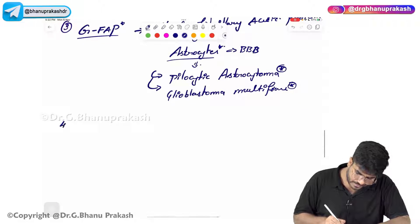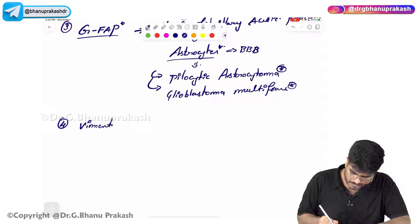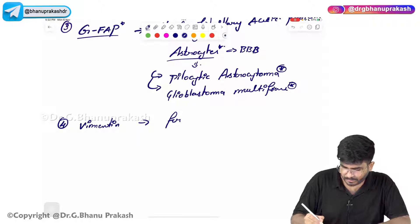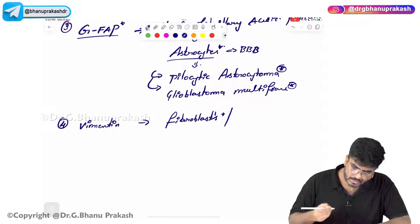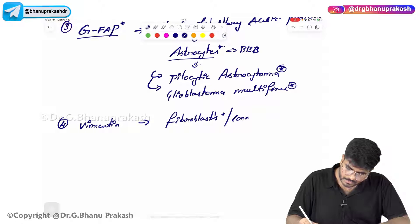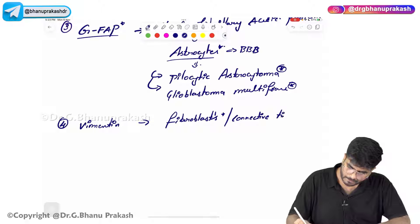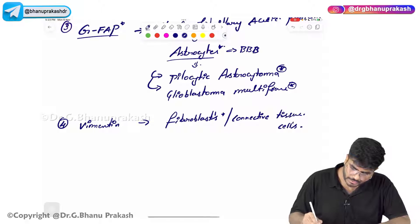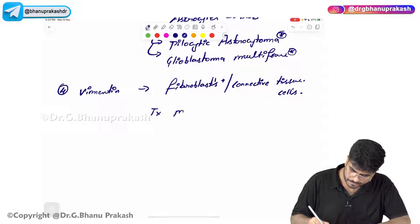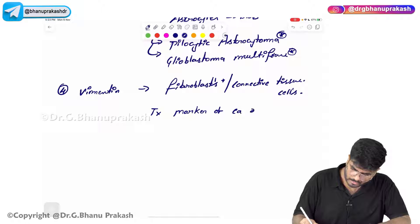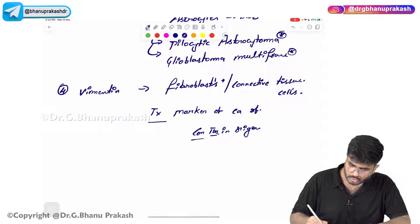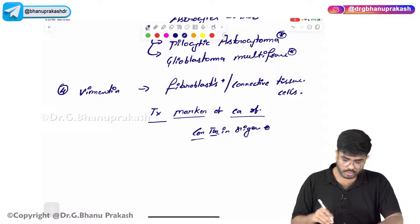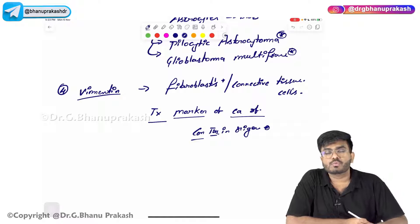The next intermediate filament is Vimentin. Vimentin is present in fibroblasts, which are connective tissue cells. It is a tumour marker of cancers of connective tissue origin — Vimentin will be present in those cells.